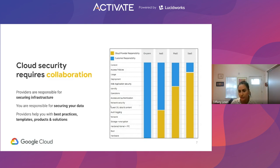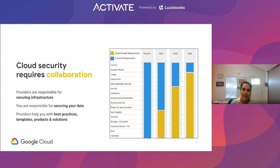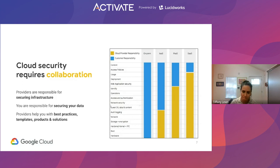When you move to platform as a service, customers assume responsibility for application-layer security, deployment, and access policies, while the cloud service provider assumes responsibility for things like access and authentication, some of the guest OS, and data and content management. Within the software as a service model, your responsibility is towards access policies and the content running within those SaaS services. For containers as a service — which is its own category — your responsibility is similar to PaaS: you're responsible for implementing access and control policies for your containerized environments.